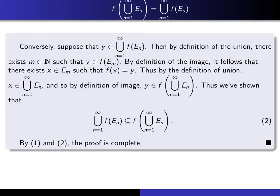And that proves that this thing is a subset of this thing. In other words, the right hand side is a subset of left hand side. And so we have both inclusions, and therefore we've proven the theorem.